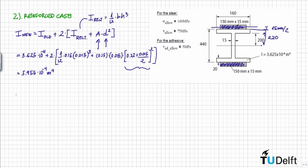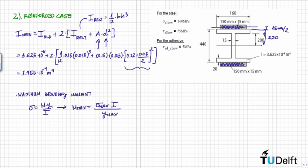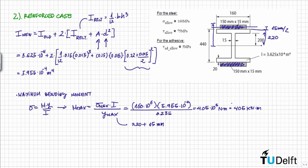Now we can calculate the maximum bending moment for the reinforced beam. The stress is equal to the moment times y divided by the moment of inertia, so the maximum bending moment is sigma_max times the new moment of inertia divided by y_max. Here y_max is the maximum distance from the neutral axis to the outermost point, equal to 220 plus 15 millimeters. The maximum bending moment for the reinforced case is equal to 405 kilonewton-meters.